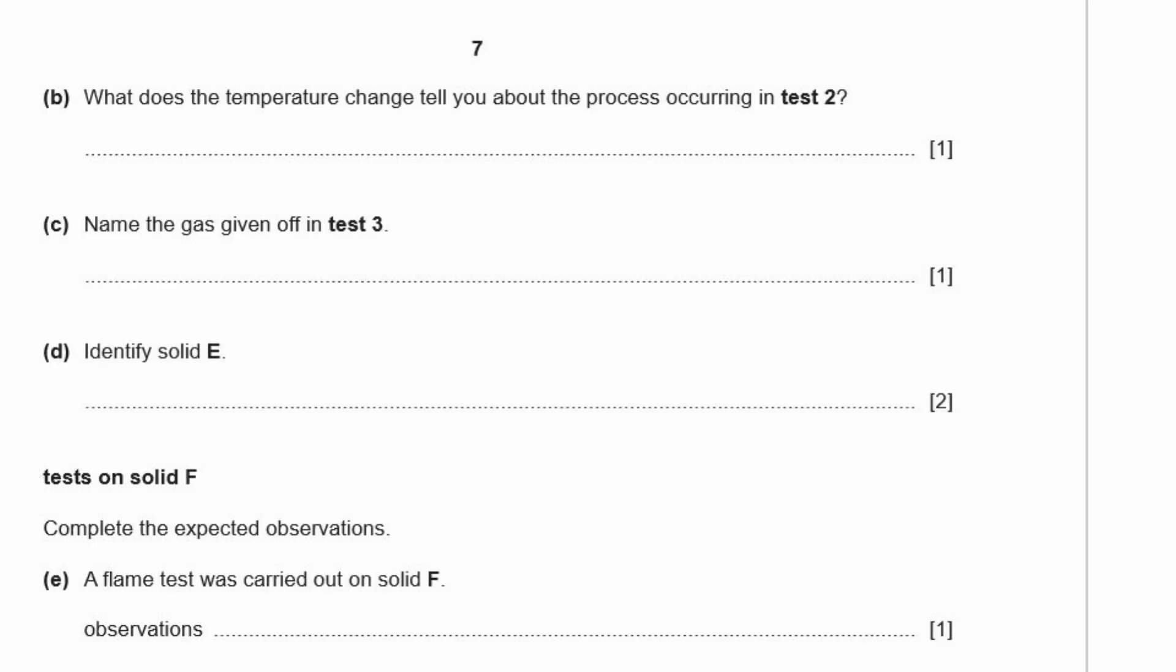B, what does the temperature change tell you about the process occurring in test two? Okay, the temperature change, it went down four degrees, which means it's an endothermic reaction. Okay, C, name the gas given off in test three. Well, the gas itself is sulfur dioxide. Sulfur dioxide is the gas that's given off when a sulfate reacts with dilute hydrochloric acid, and it turns potassium manganate 7 from purple to colorless. Okay, D, identify solid E. So we, as we said, it was sodium sulfite. And this is, so that's Na2SO3. Alright, but you can just write sodium sulfite.